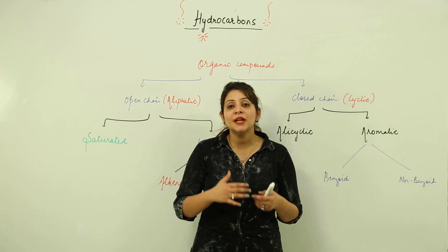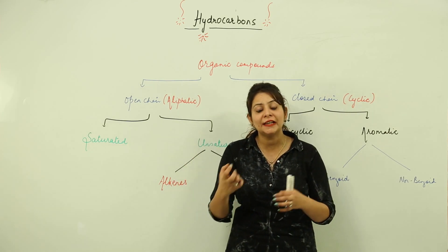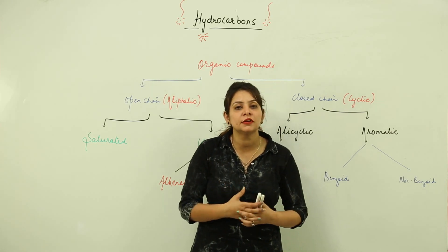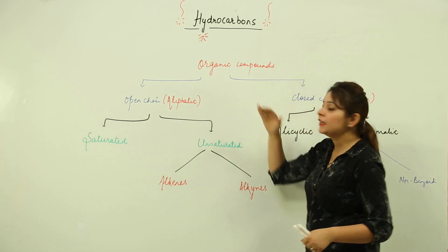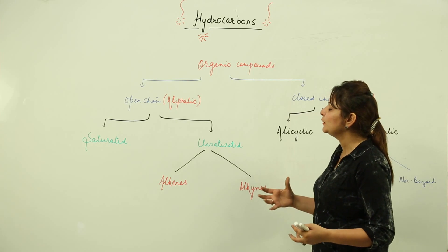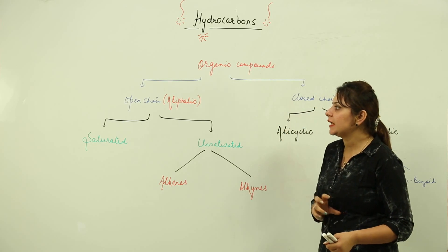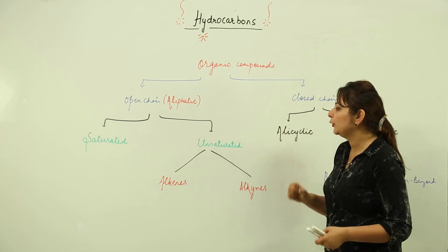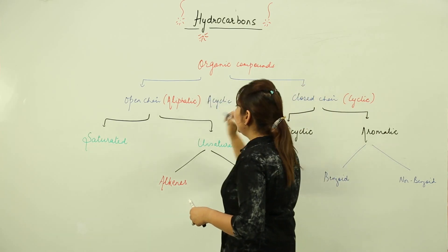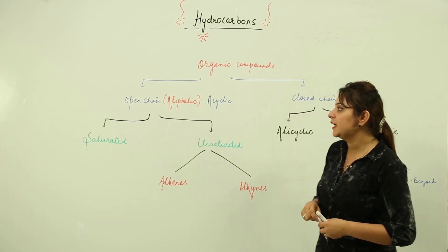Here we are going to classify organic compounds so that you become familiar with what subtypes of organic compounds exist and what kinds of compounds with different properties we can find. Organic compounds are divided into two categories: open chain and closed chain. The open chain is actually called aliphatic or acyclic, and we have closed chain or cyclic compounds.